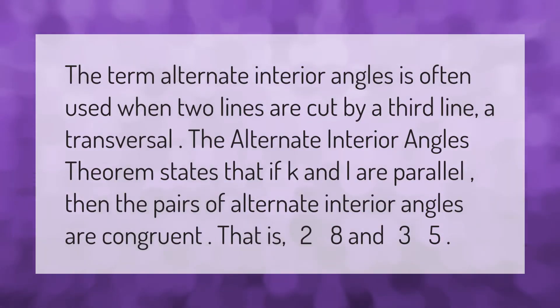The term alternate interior angles is often used when two lines are cut by a third line, a transversal. The Alternate Interior Angles Theorem states that if k and l are parallel, then the pairs of alternate interior angles are congruent. That is, 2, 8 and 3, 5.